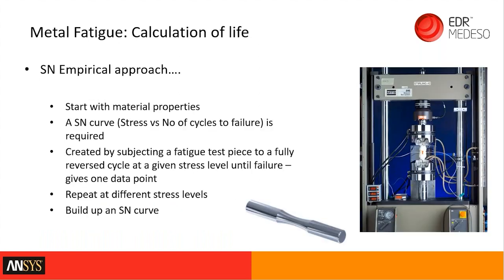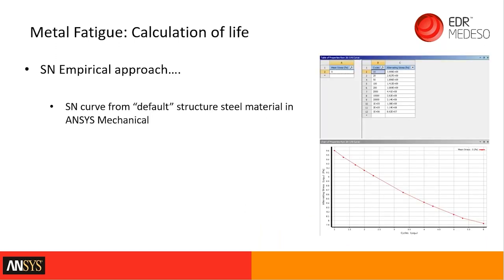Starting with the stress life (SN) approach: the material property needed is an SN curve. We take a fatigue test piece, load it to some stress value — say 100 MPa — fully reverse it from tension to compression, repeat until failure, and count the cycles. That gives one data point. Repeating at different stress levels builds the SN curve. On this slide we can see the SN curve that comes with the default material in ANSYS Mechanical.